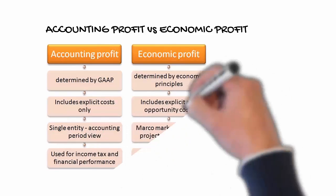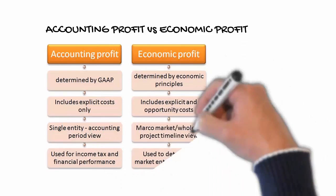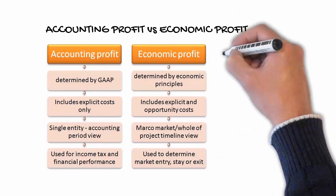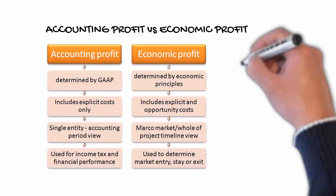Explicit cost only is used in the calculation of accounting profit. In economic profit, explicit cost and implicit cost are both deducted from total revenue.